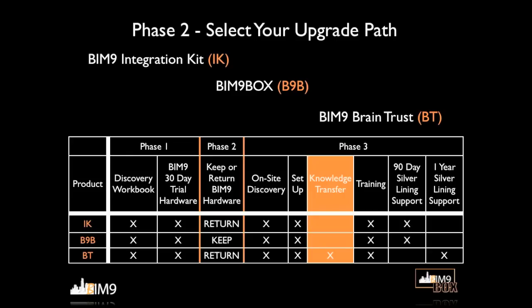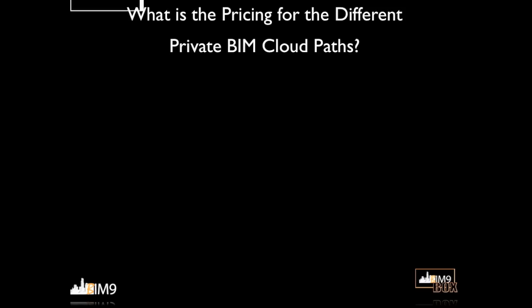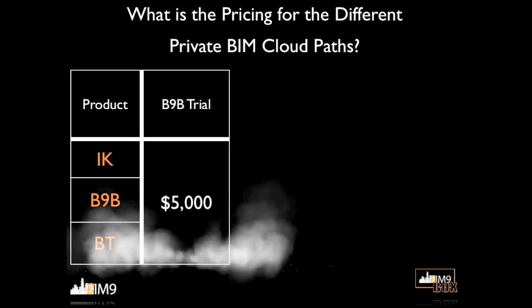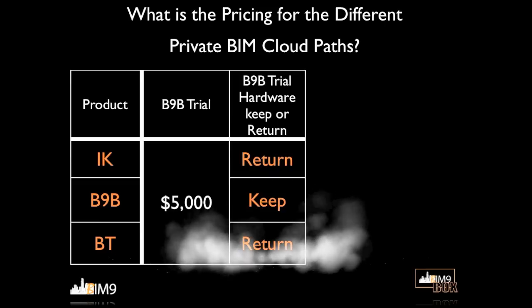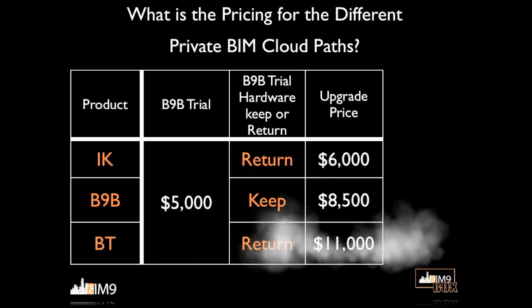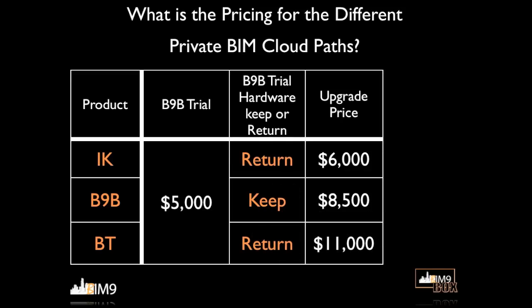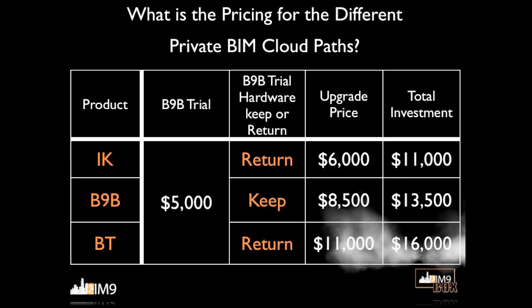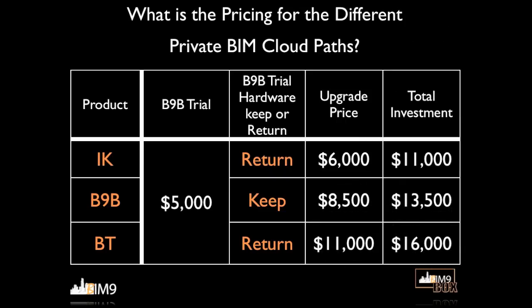The pricing for the trial phase is $5,000 across all three options. In Phase 2, once you select your path, upgrade pricing is $6,000 for the Integration Kit, $8,500 for the BIM9 Box, and $11,000 for the Brain Trust. So your total investment is $11,000, $13,500, or $16,000 depending on which upgrade option you select. Keep in mind that the Integration Kit and Brain Trust options require you to provide the final hardware for your permanent Private BIM Cloud, so factor that into your total investment as well.